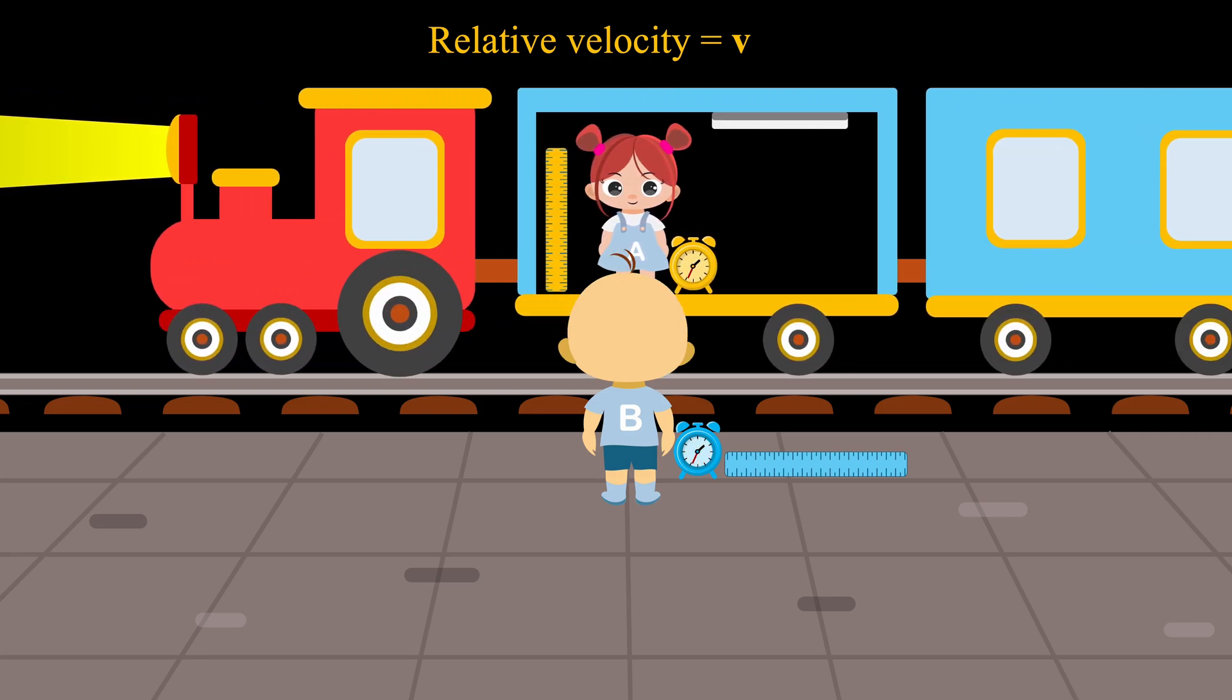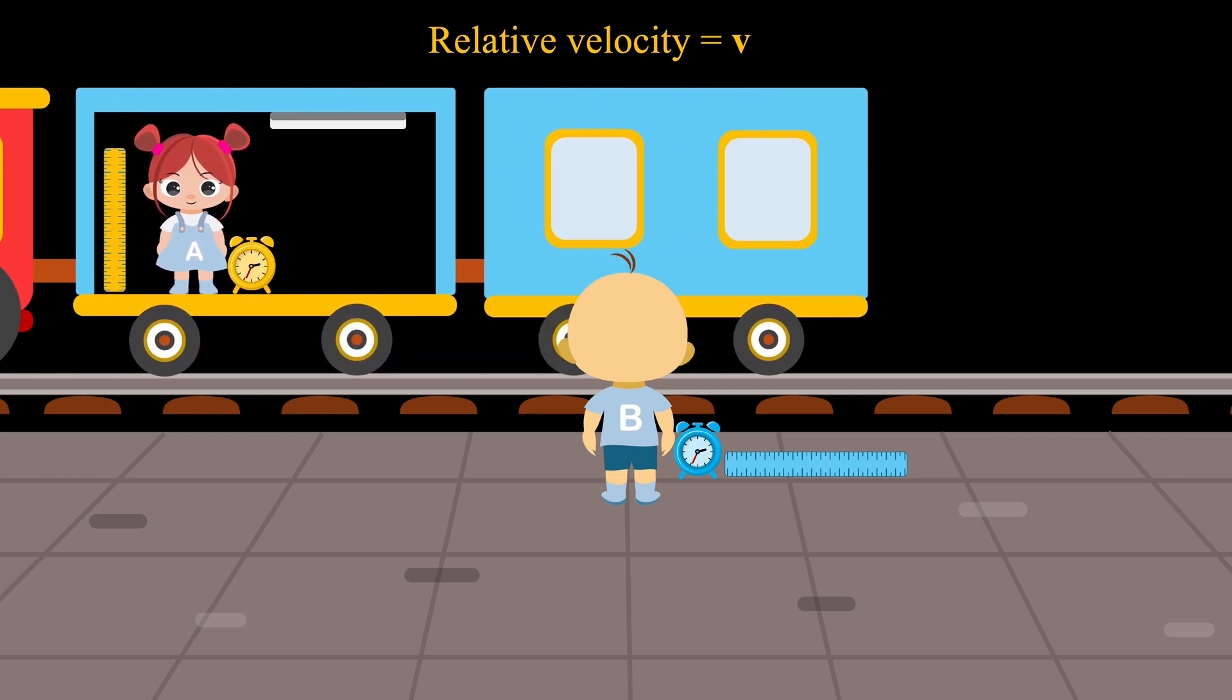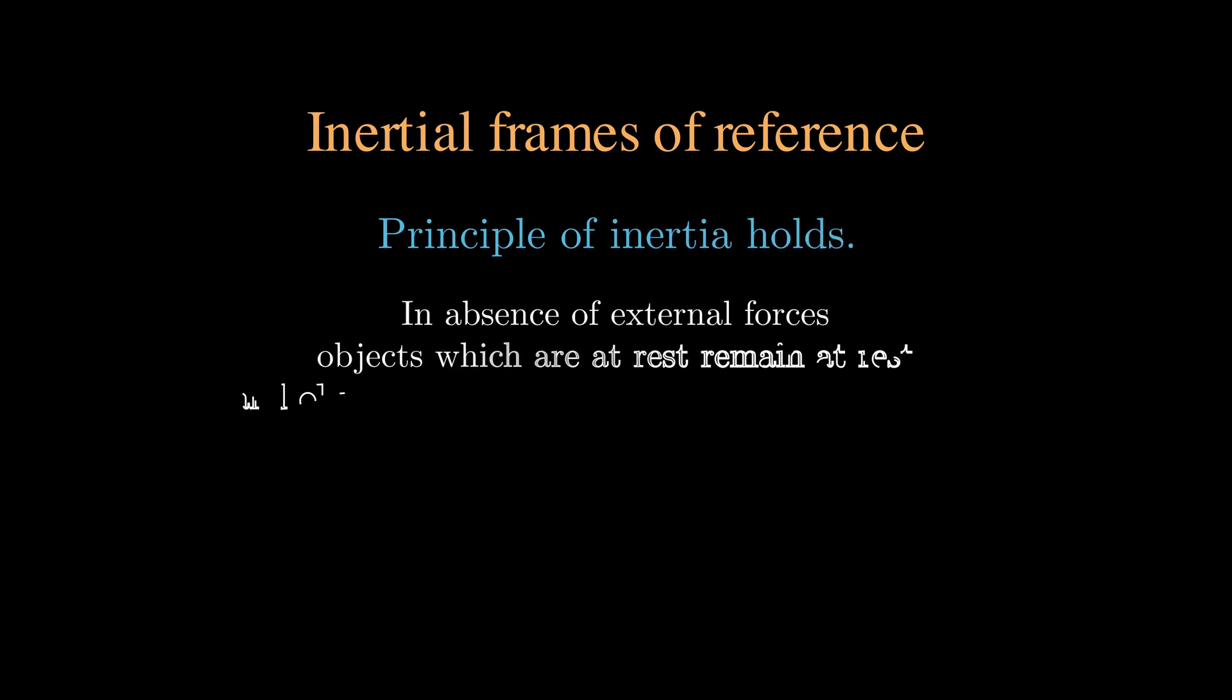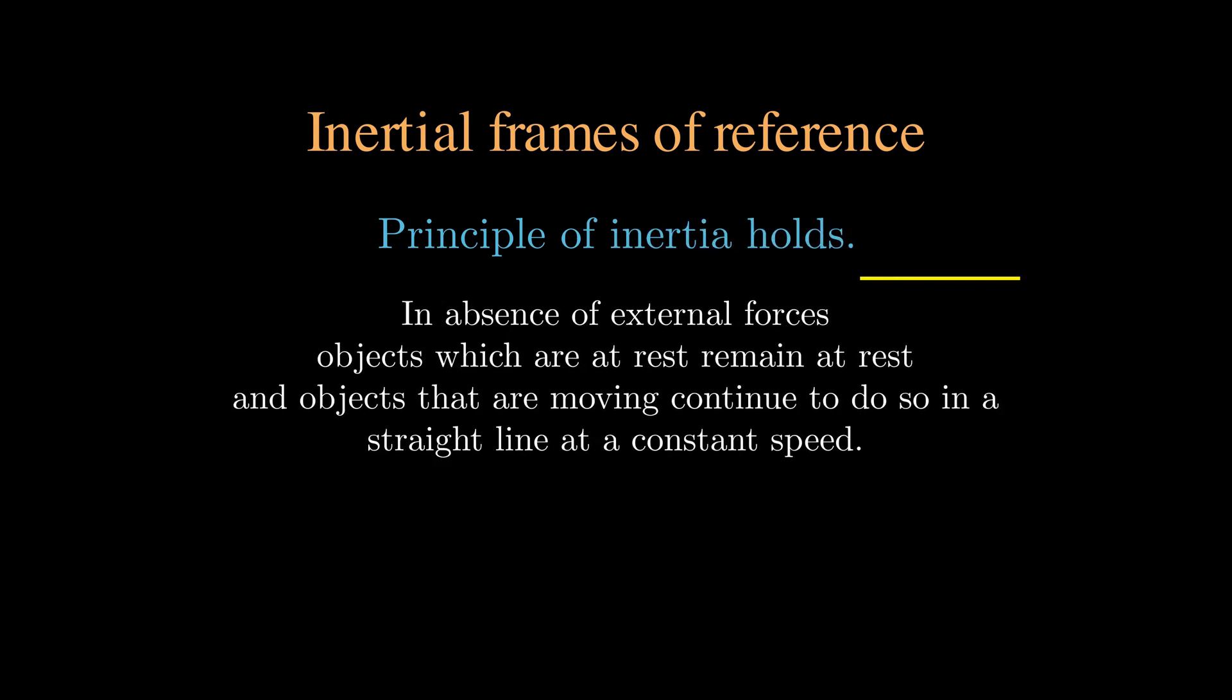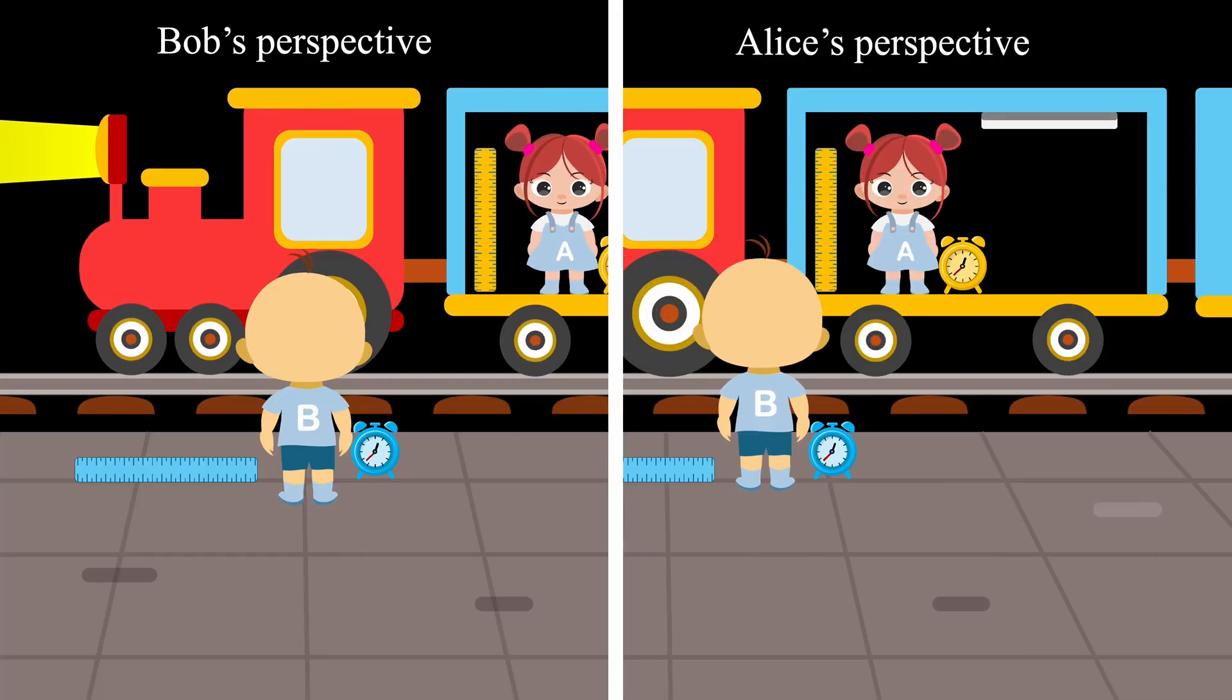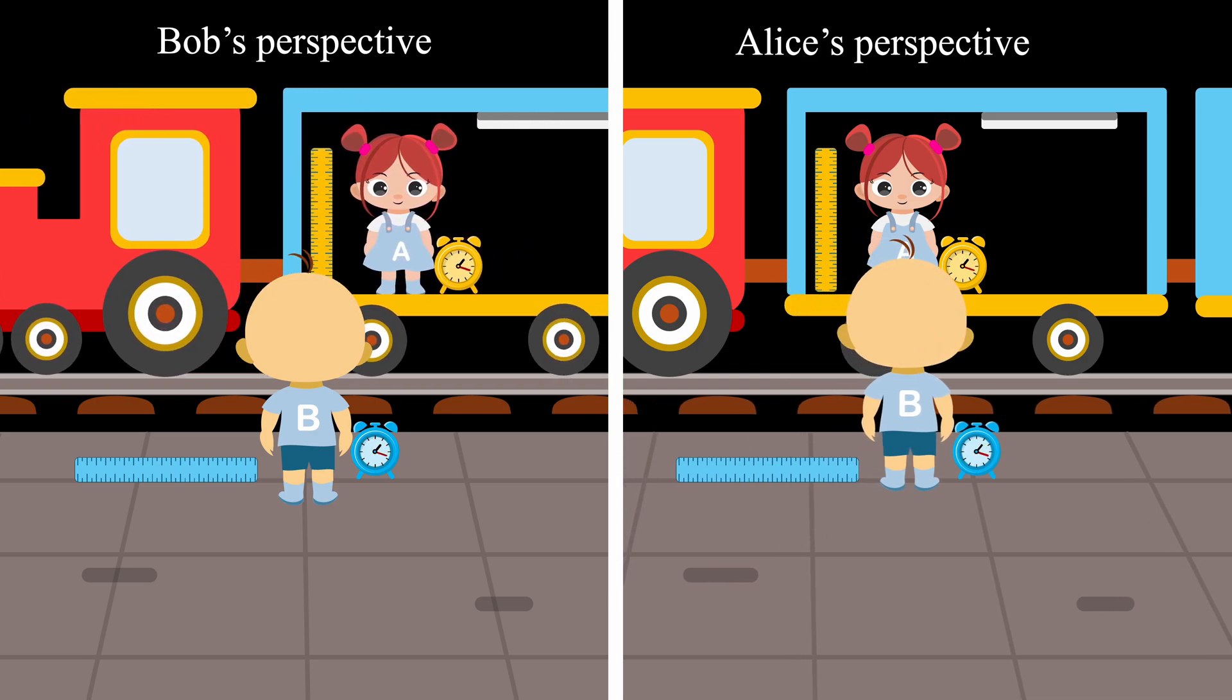Alice is on a train moving at a uniform velocity V relative to Bob, who is standing on the ground. As they experience no acceleration, reference frames in which they are traced are inertial frames. The first concept states that the laws of physics are the same for both of them. It is called the principle of relativity.